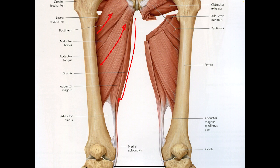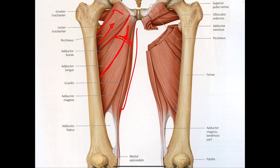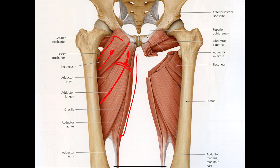The adductor longus is the biggest and the longest one on the interior of the leg. It helps establish this curve of the silhouette, and the pectineus completes that silhouette shape on the interior of the pelvis, right where it connects into your pelvic bone.